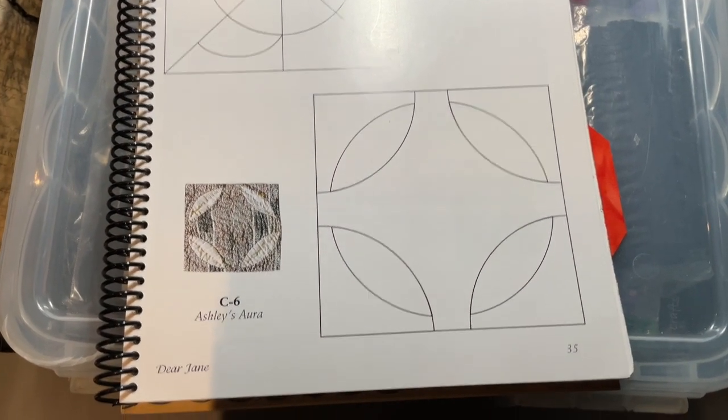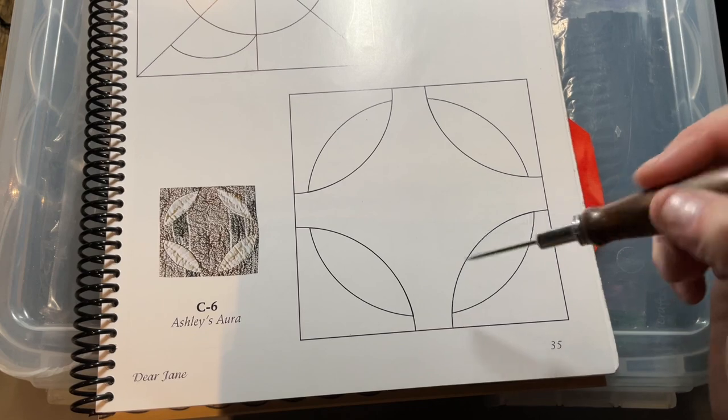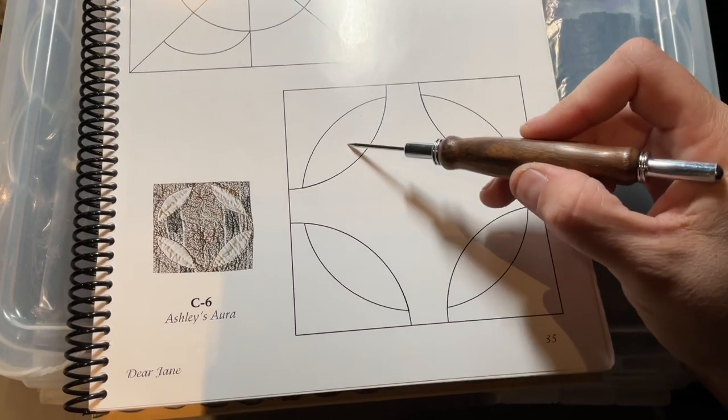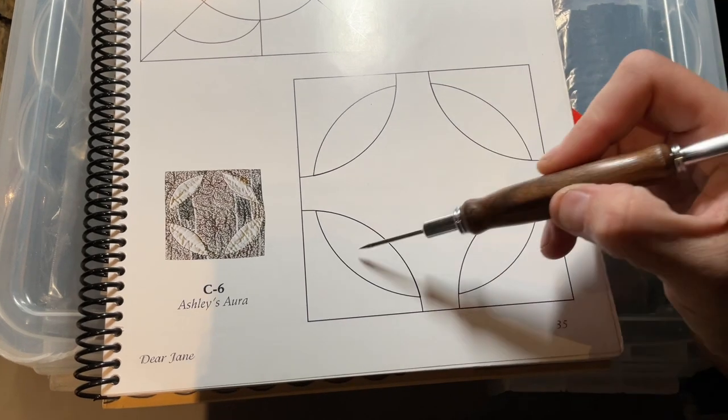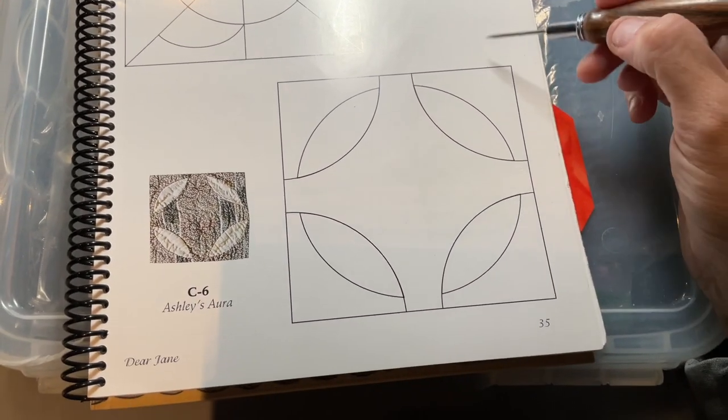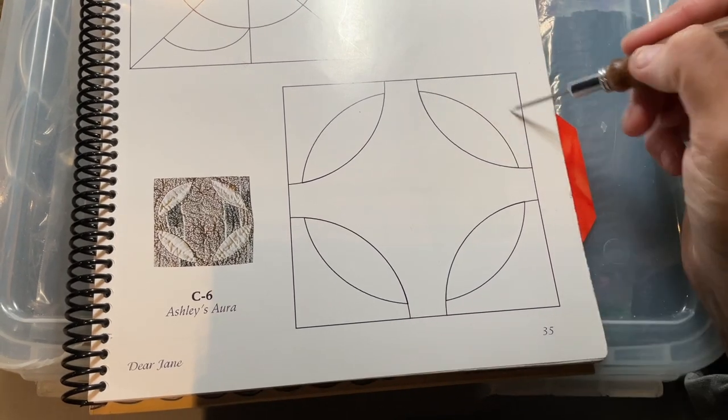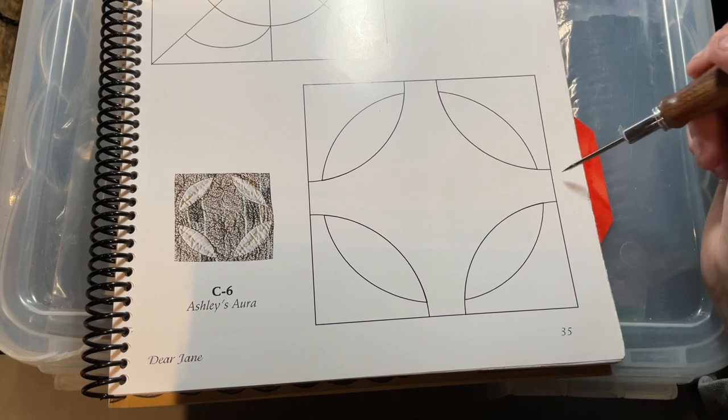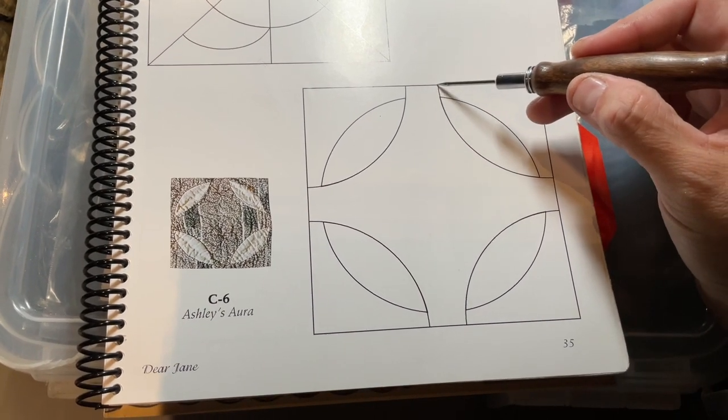Now we're up to C6. C6 is actually only seven pieces. We've got a corner section here and then this center section here. So the assembly is going to be: I'm going to baste these two pieces, attach them, and then put them in here. The trick is going to be to make sure that everything lines up properly.